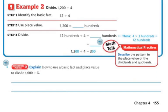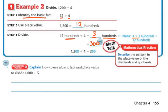Example two: divide 1,200 by 4. Again, I need to identify the basic fact, which is 12 divided by 4. That's the same as saying 12 hundreds divided by 4, which is going to be 3 hundreds. Because 4 times 3 hundreds is 12 hundreds. So my answer is 300 because it's 3 hundreds. Notice there are two zeros here — kind of like when I was doing multiplication.